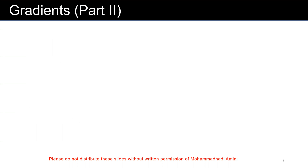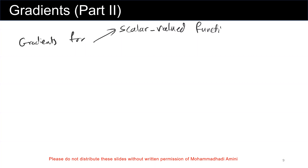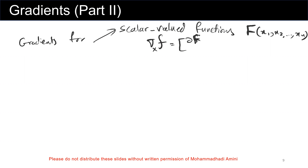In gradient part two, we talked about gradients for scalar valued functions. For a function f of x1, x2, through xn, the gradient of f with respect to vector x is equal to the partial derivative of f with respect to x1, partial derivative of f with respect to x2, through partial derivative of f with respect to xn.